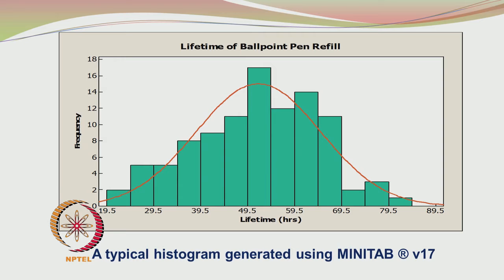Here is an example histogram where bins or cells have been created. Each bin is about 5 hours in width, with lifetime in hours on the x-axis and frequency on the y-axis. Between 19.5 to 24.5 you have 2 occurrences, between 24.5 to 29.5 you have 6 occurrences, and so on. There are 13 bins used here.